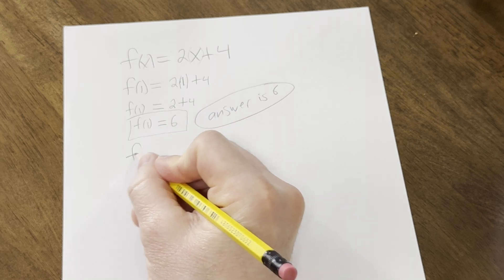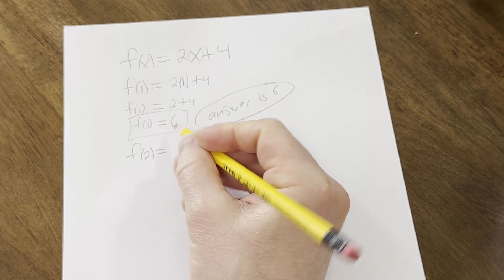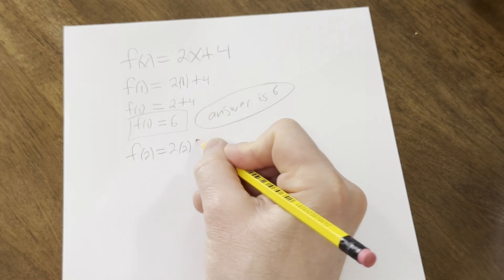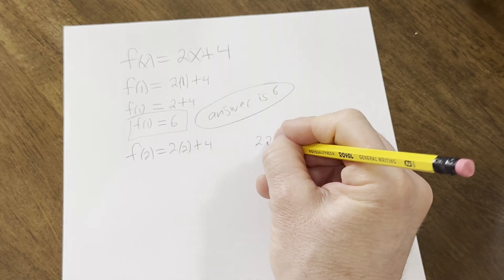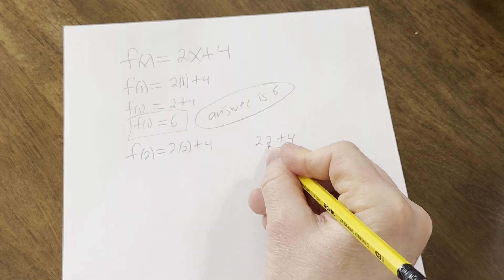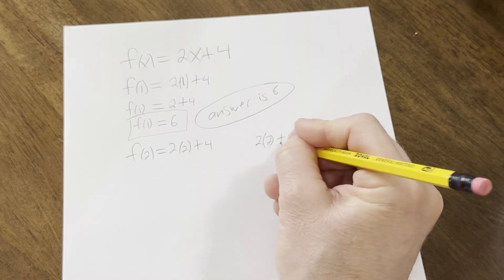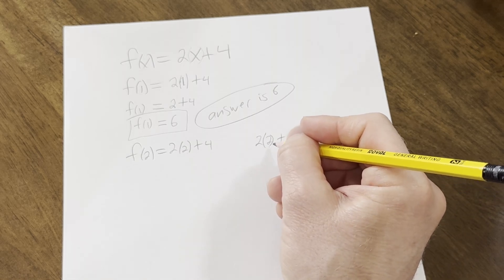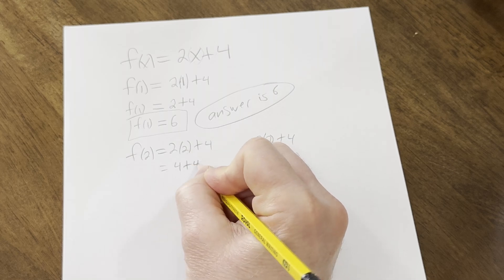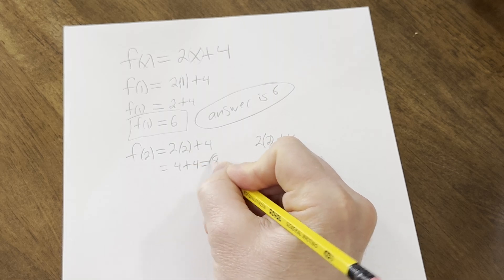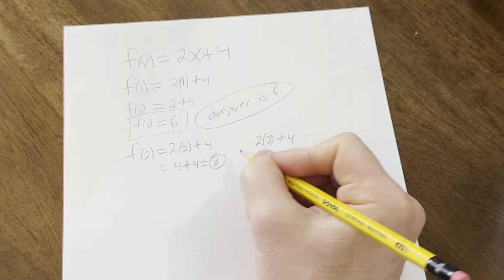So let's say we plug in 2. I'll do it faster this time. So it's 2 times 2 plus 4. Notice how I put the parentheses there? Because if you don't put it, it's going to look weird. It looks like 22, right? So you have to put the parentheses there to make it not ambiguous. So 2 times 2 is 4. And then 4 plus 4 is 8. Notice how I always write an equals after each step, right? It's very organized.